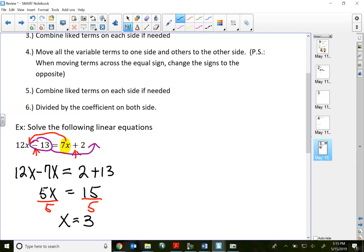So 5x is a variable term because that term contains a variable. If the x is the variable, then the 5 is the coefficient. That's why I have the last step requiring me to divide both sides by the coefficient.